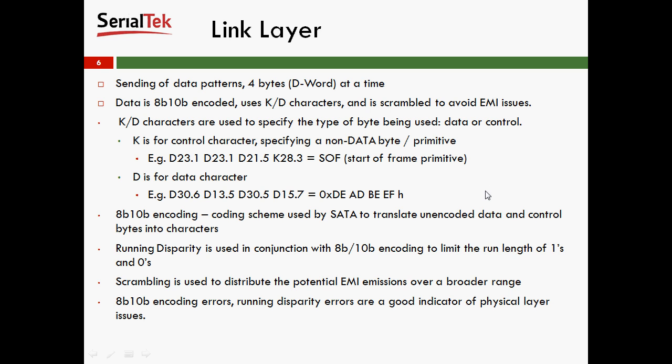If you Google 8B/10B encoding, you'll find it pretty quickly. There's also the concept of running disparity, which is used in conjunction with 8B/10B to limit the run length of 1s and 0s on the line. Typically you don't want more than 6 or 7 ones or 6 or 7 zeros at a time, simply because it makes the lines stay high a little bit too long. Scrambling is also used to distribute potential EMI transmissions over a broader range. 8B/10B encoding errors and running disparity errors are generally a good indicator that you have some physical layer issues — problems with the connection between your host and your device.